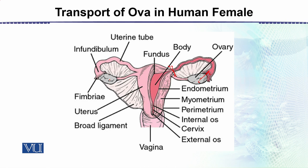If the egg is not fertilized, it will move all the way downward and will be eliminated through the vaginal opening. Here we simply discuss the root — the transport of the ovum.